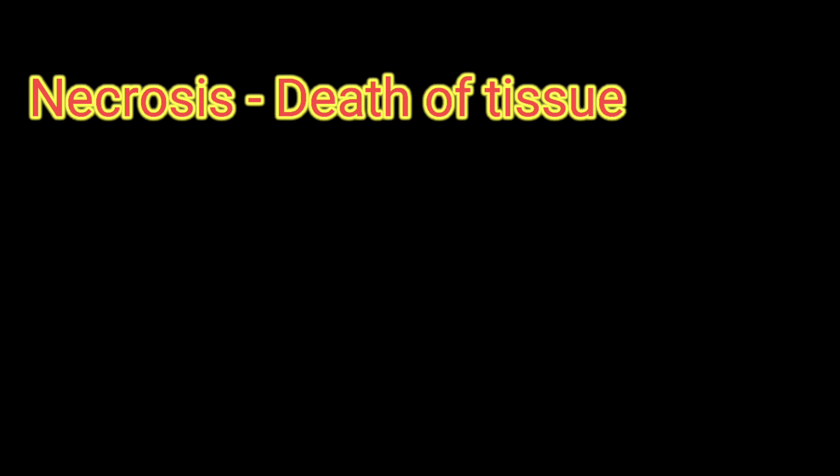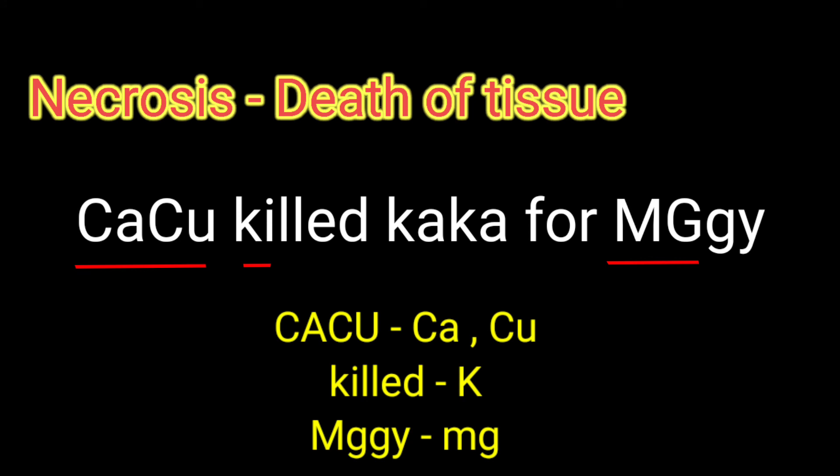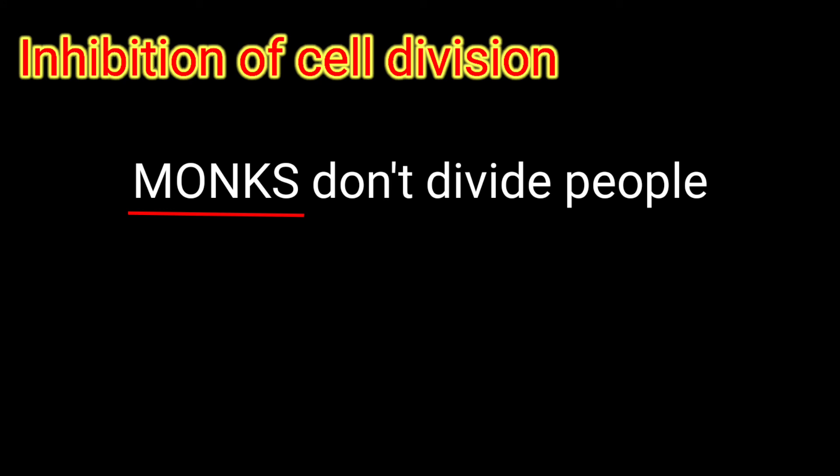Necrosis, the death of tissue, occurs due to the deficiency of calcium, magnesium, copper and potassium. The trick is: 'Kaku killed kaka for Magi.' In kaku, CA and CU denote calcium and copper. In kilda, K denotes potassium. In Magi, MG denotes magnesium.